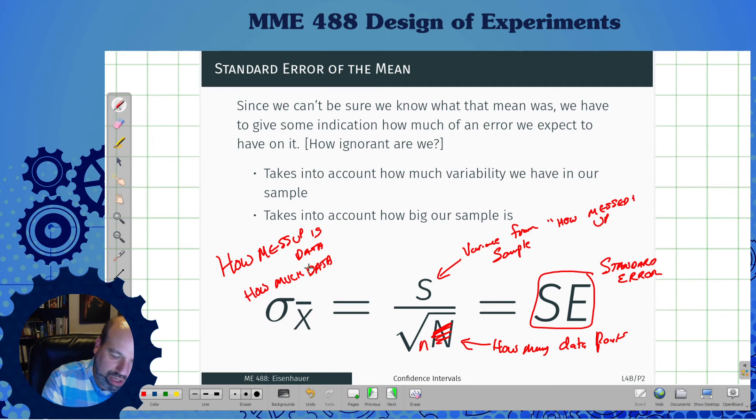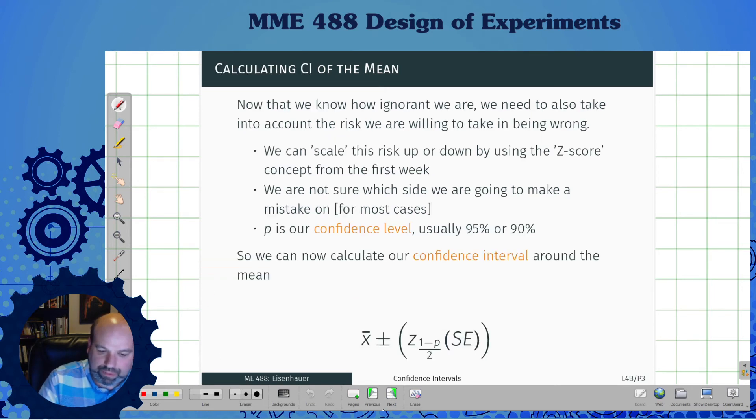The more messed up our sample is, the bigger the error. We also have to say how many data points did I use? Our sample size, little n. We're going to call the ratio of the variance from our sample over the square root of sample size what's called a standard error. We're going to use that particular feature to build our confidence intervals. That's saying how messed up is our data and how much data did we collect? We're in control of sample size. Life is in control of variability. It's just the way it is. This is us. We're in control of how much data we can have.